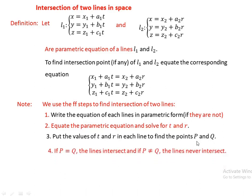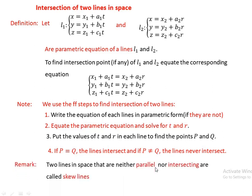Therefore, as a conclusion: if P equals Q, the two lines intersect. If P and Q are different, the lines never intersect. As a remark, two lines in space that are neither parallel nor intersecting are called skew lines.